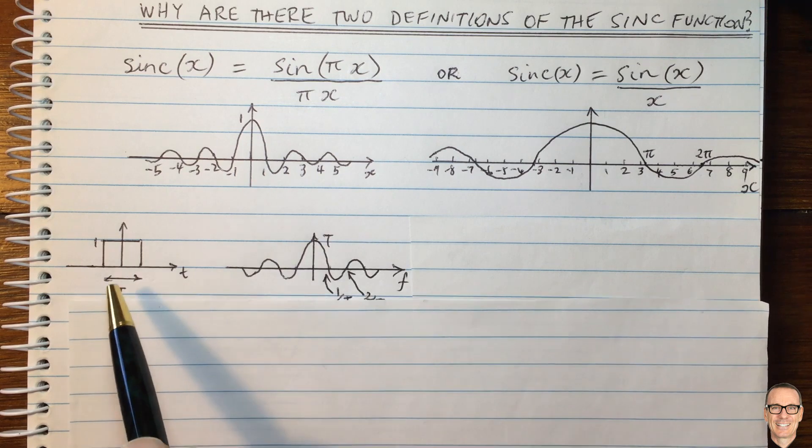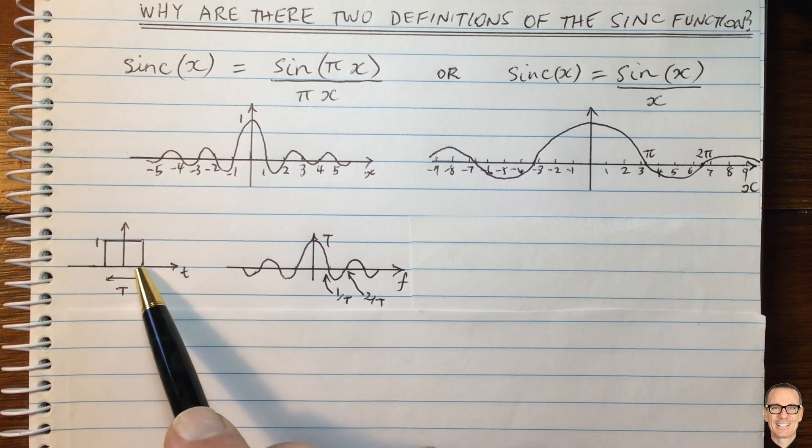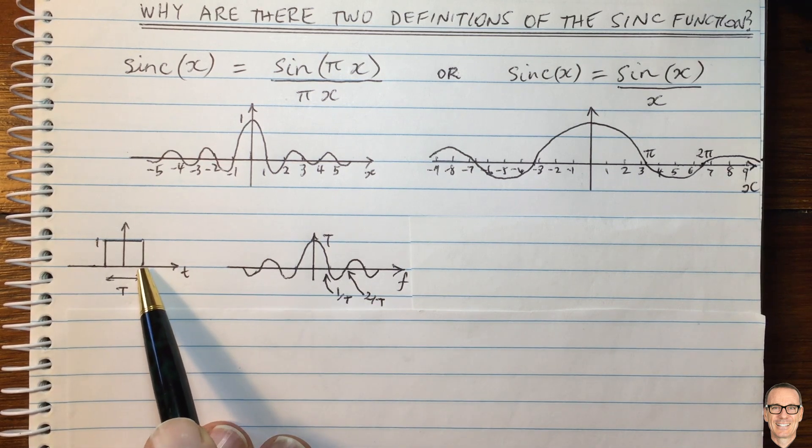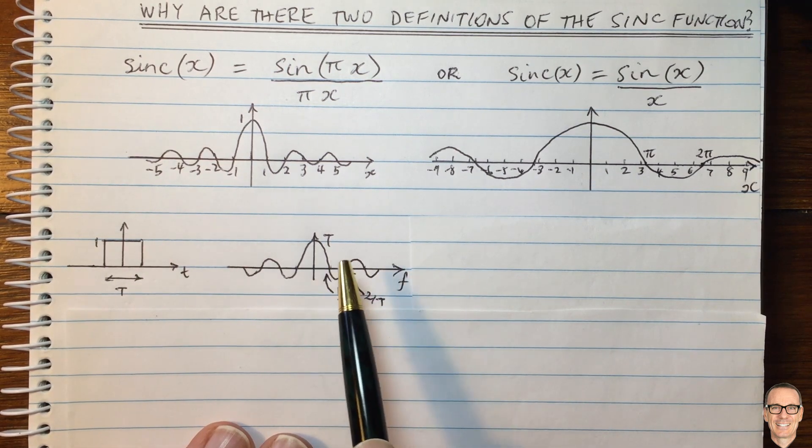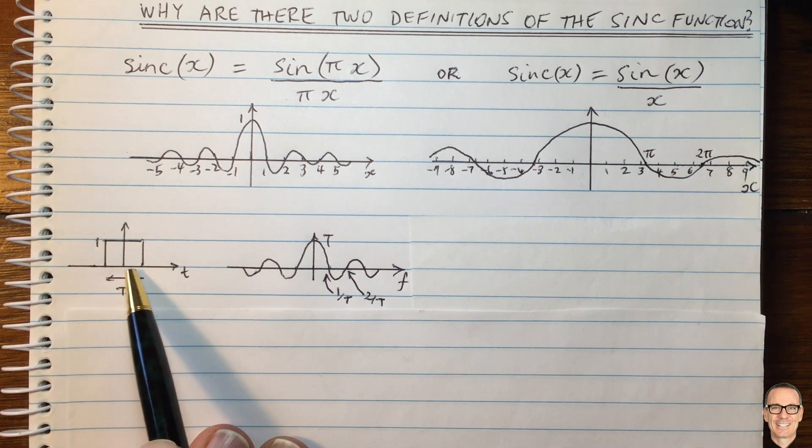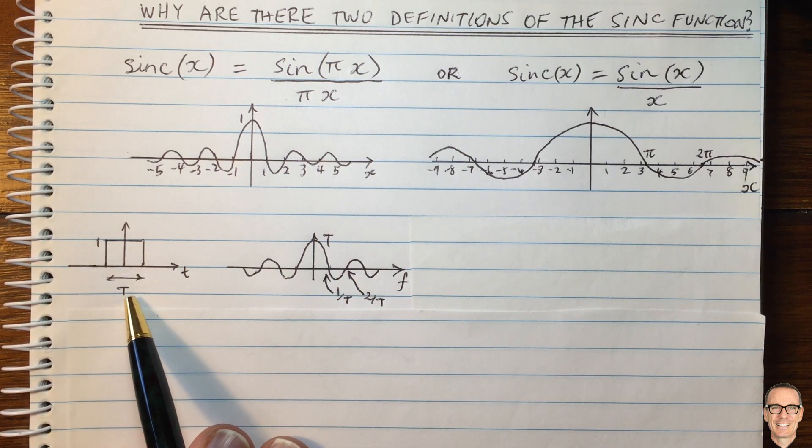Okay, so let's look at this square function in the time domain. It's a very common function, especially with digital communications. We know that its Fourier transform is a sinc function. And if the base of the square in the time domain is of width capital T,